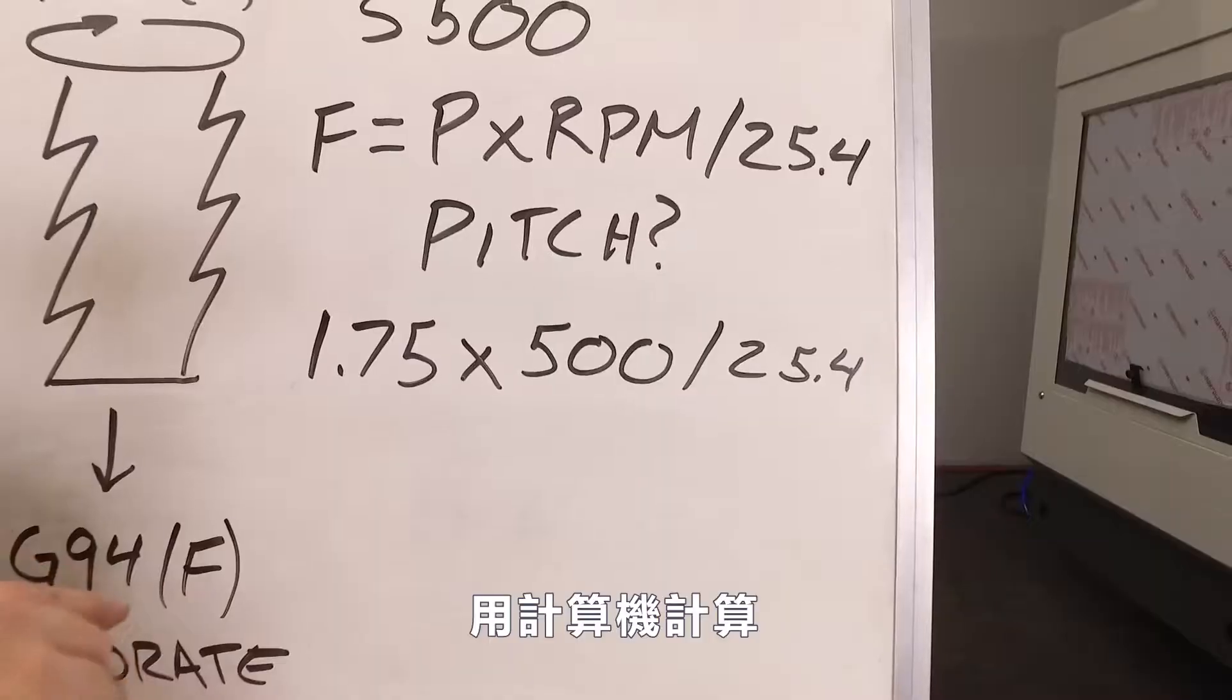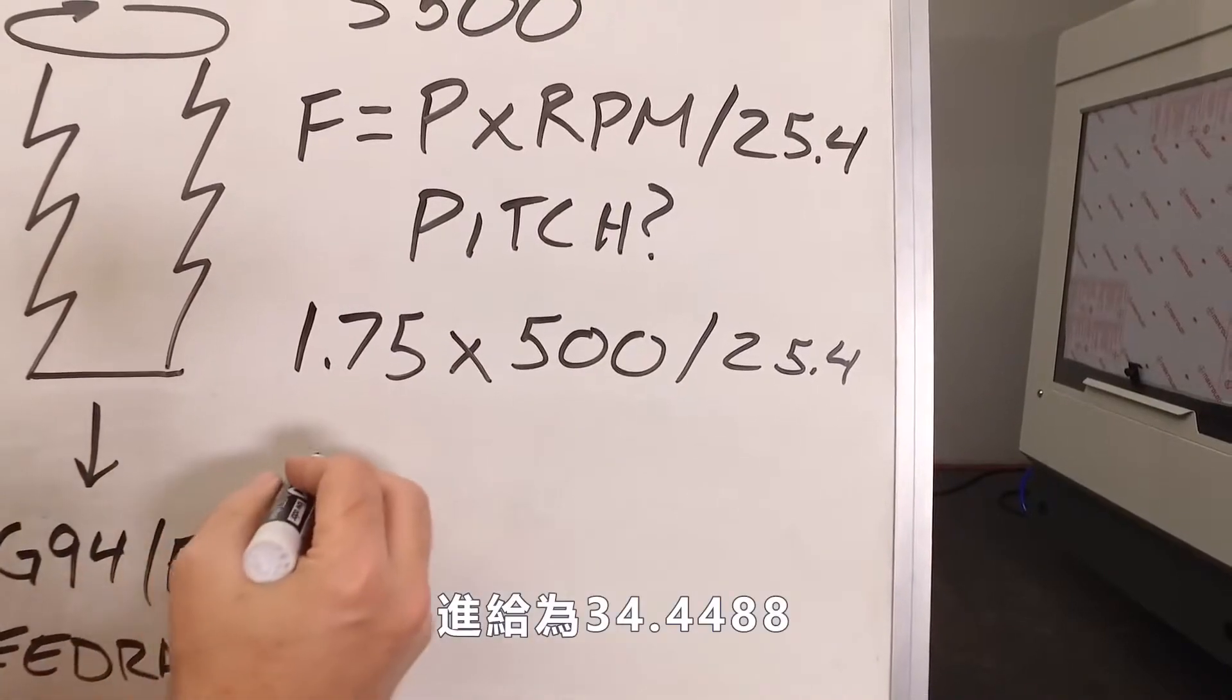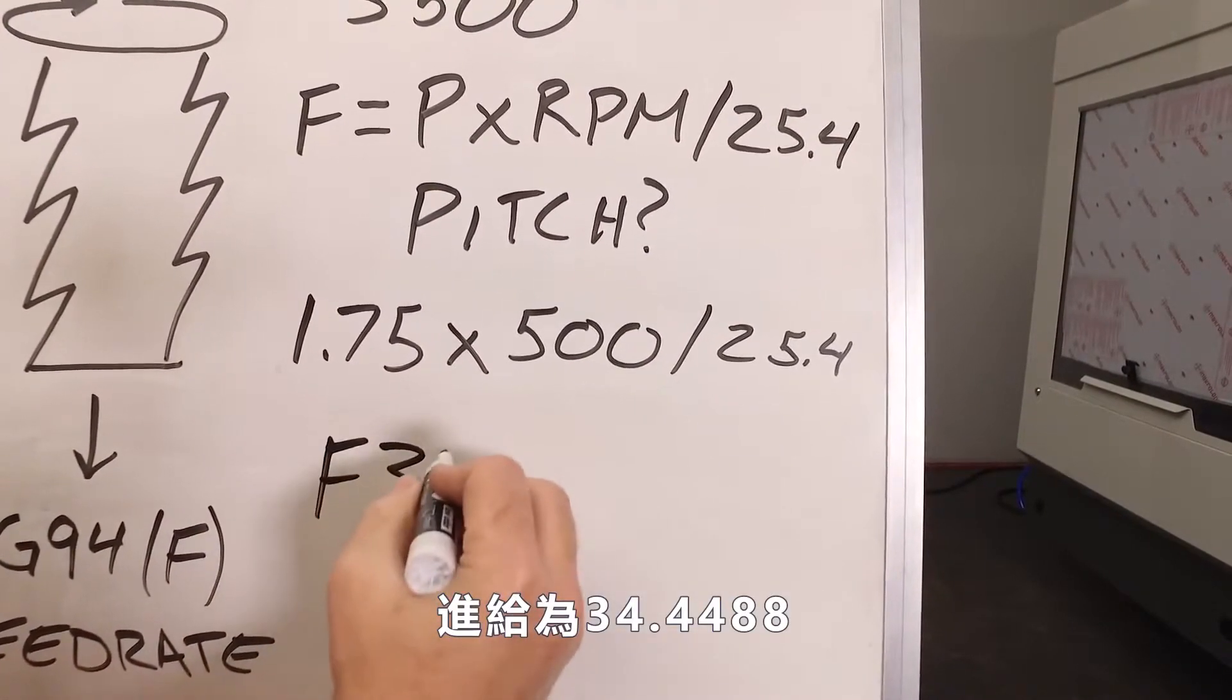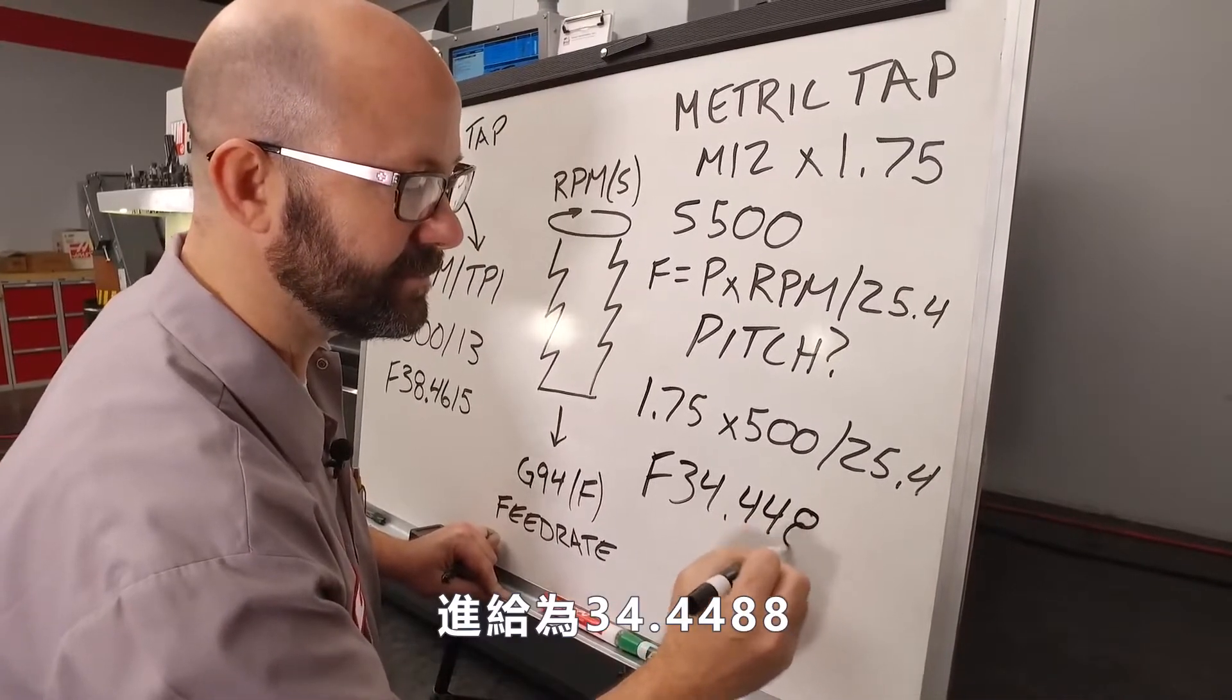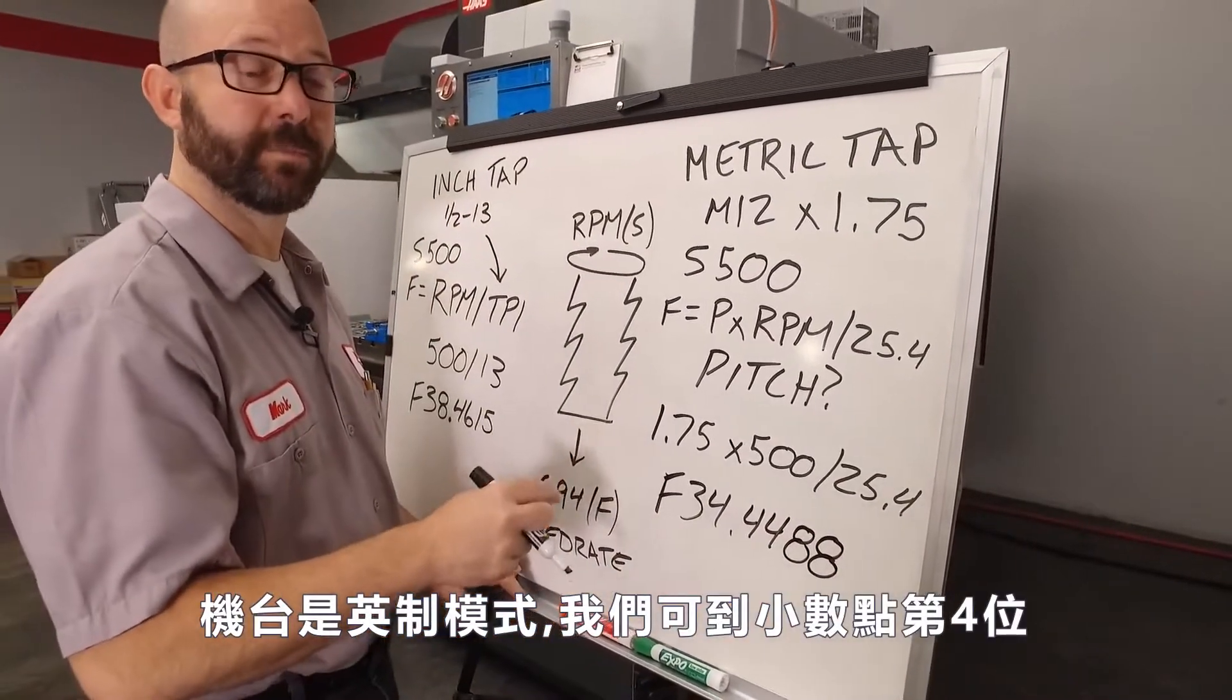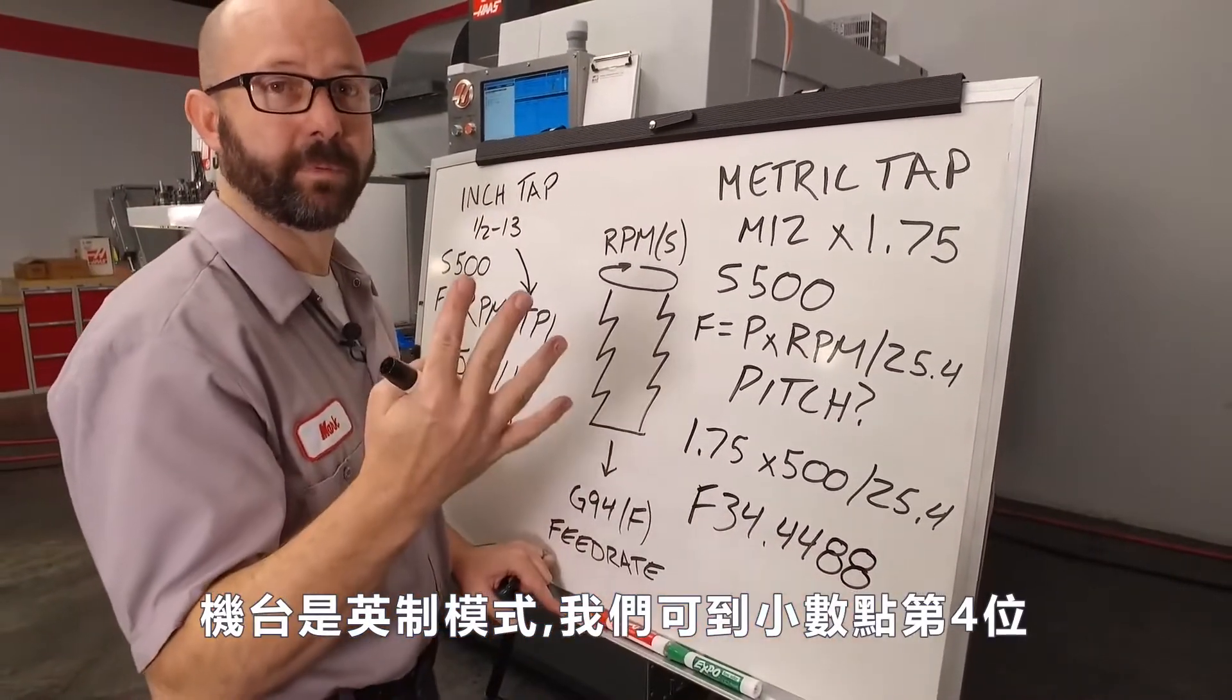When we plug this into a calculator, we're going to get a feed rate, an inch per minute value, of 34.4488. And again, because we're in inch mode, we've rounded this out to four decimal places.